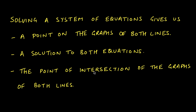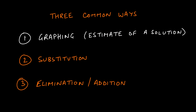Please remember these three equivalent statements — this will be very important. There are three common methods to solve a system: graphing, which only gives an estimate unless you're using a computer; substitution, which we'll cover in this video; and elimination/addition, which we'll get to later in the semester. For now, get comfortable with graphing and substitution.